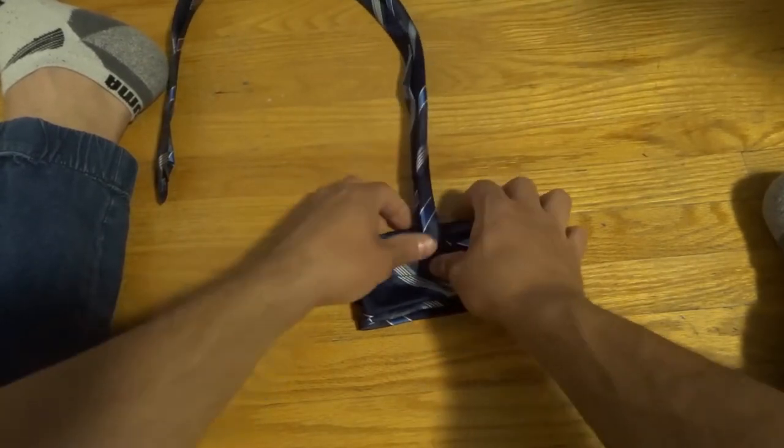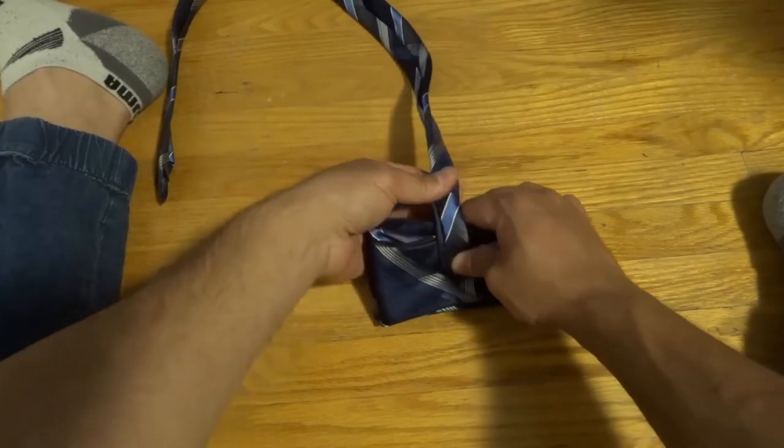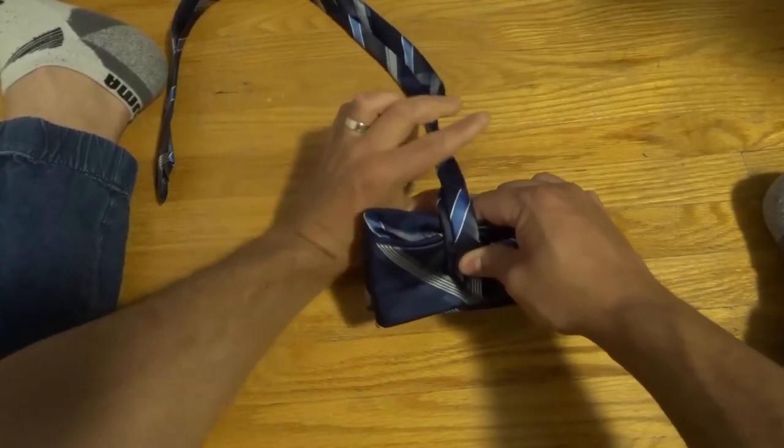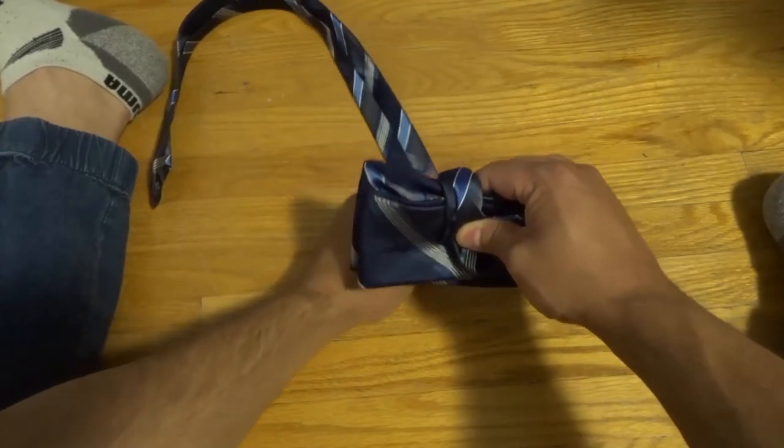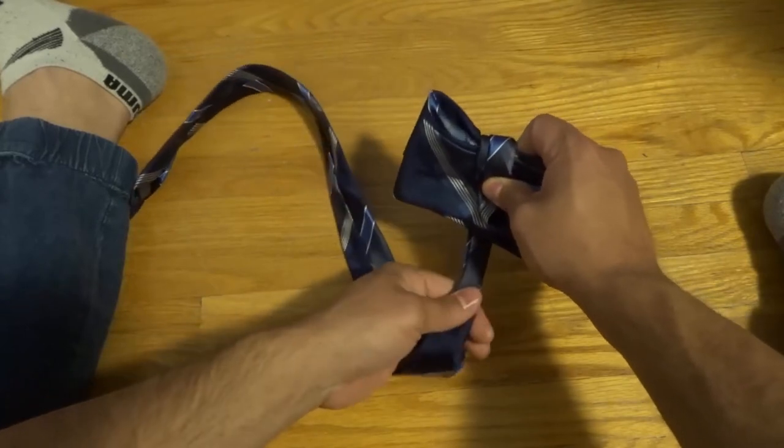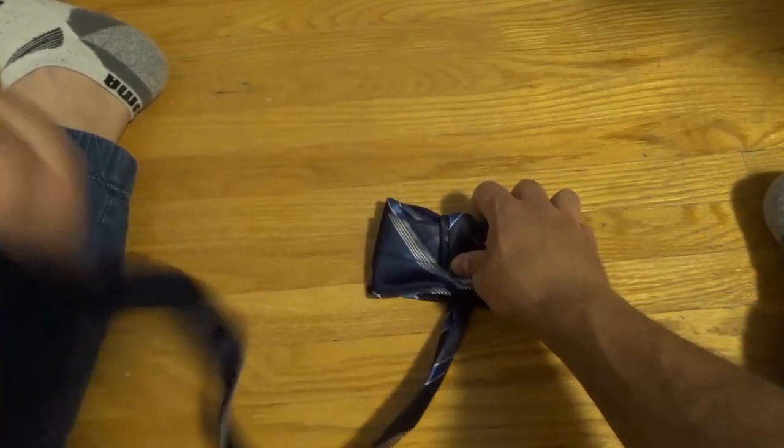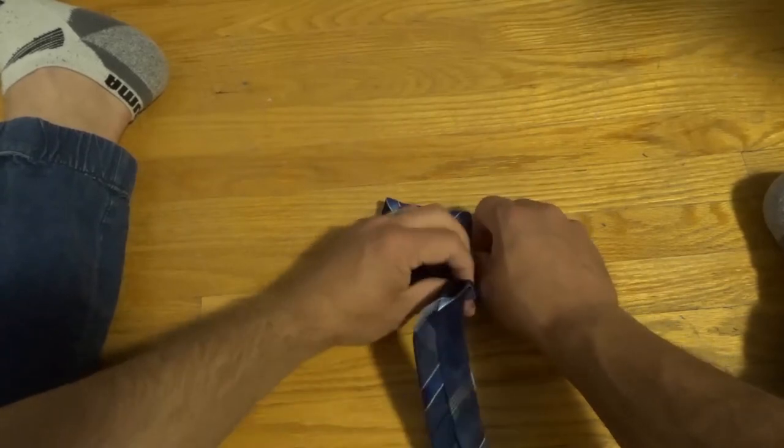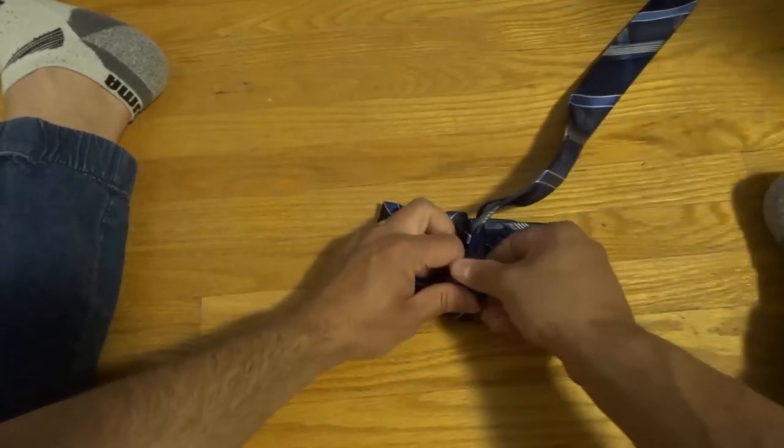And what I'm going to do while continuing to fold it is wrap it around. So check this out. I'm folding it, and I'm wrapping it around, as you can see right there. And now what we're going to do is we are going to create just a single overhand knot.